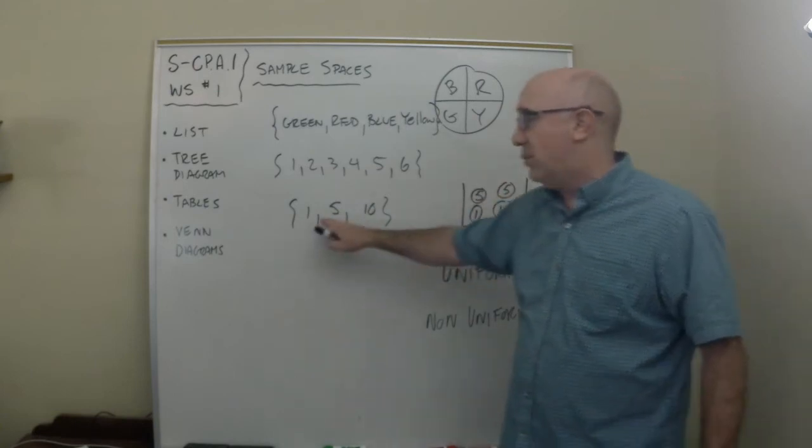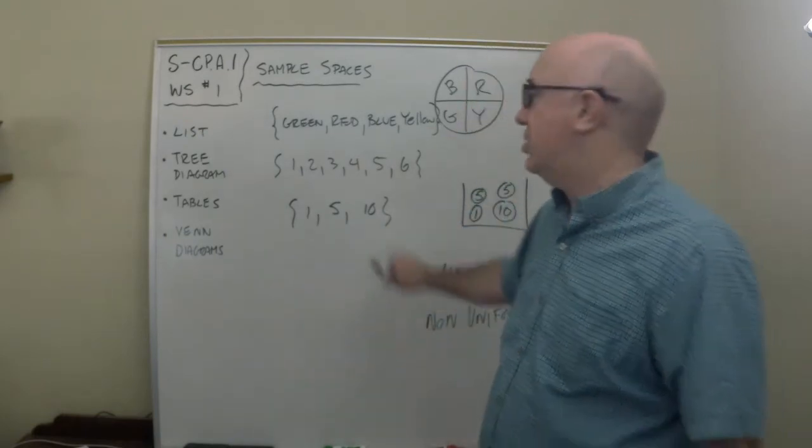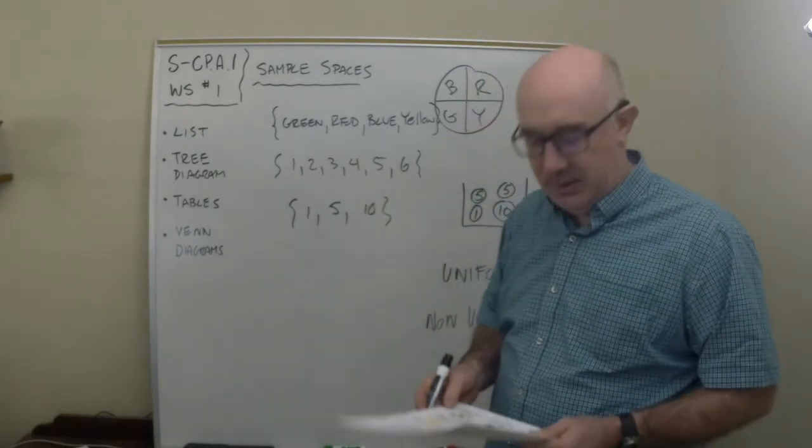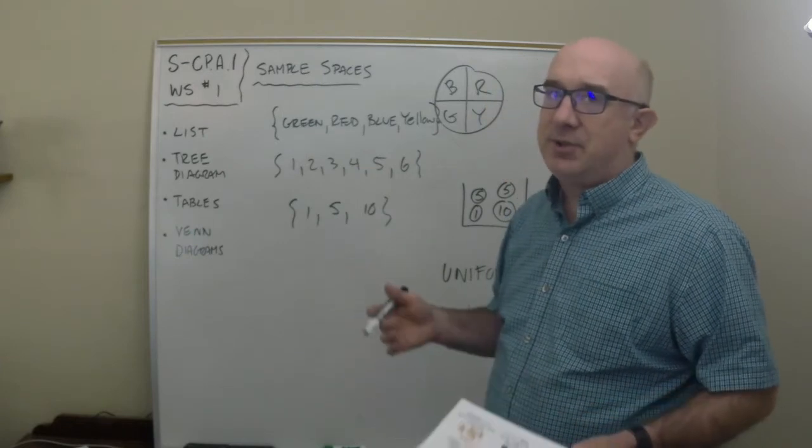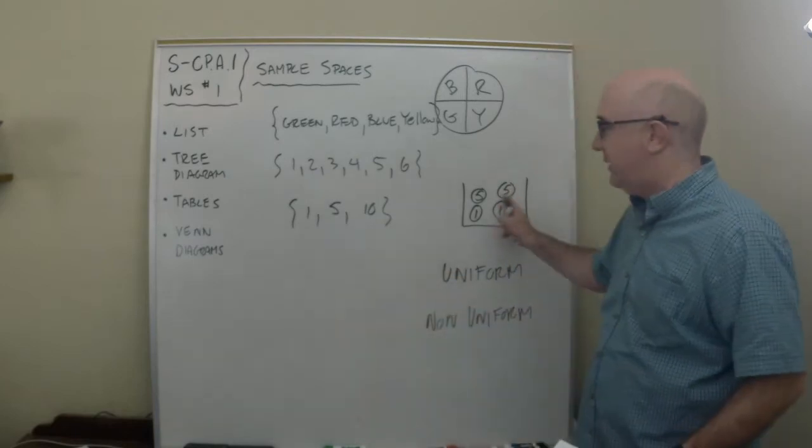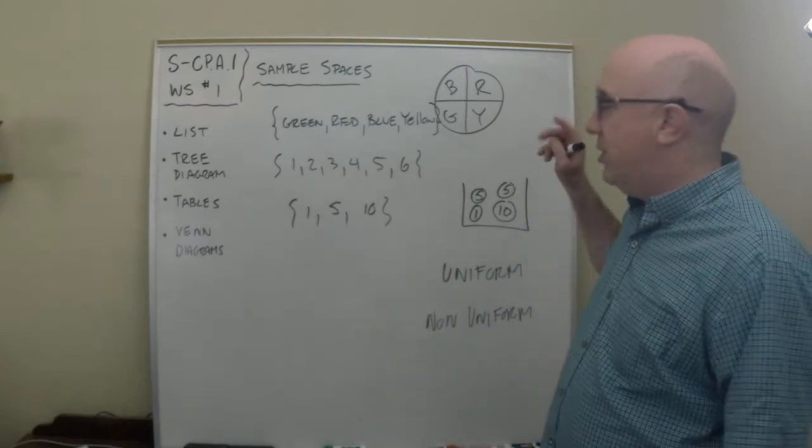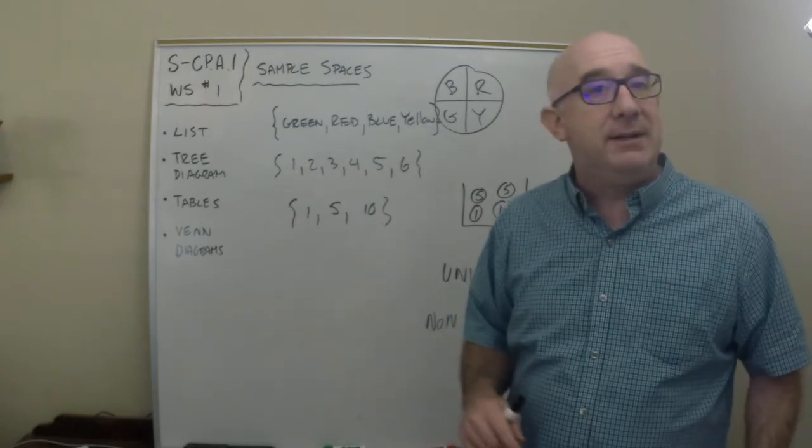This though is not uniform because one of the items has a greater chance than the others. Getting a five is more likely, and so this is not a uniform probability. So when you are looking at a sample space, one, you just list out the items that are there, not repeating things more than once. When you're determining uniform you're trying to see if something is more likely than something else.